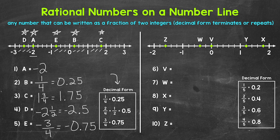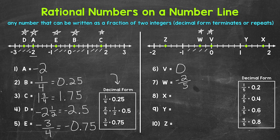Looking at number six, we have point V, which is at zero on the number line. Moving on to number seven, we have point W, which is between zero and negative one. We have negative one fifth, negative two fifths, negative three fifths, negative four fifths, and then negative one. So point W is at negative two fifths. As a decimal, negative two fifths equals negative 0.4 — negative four tenths.